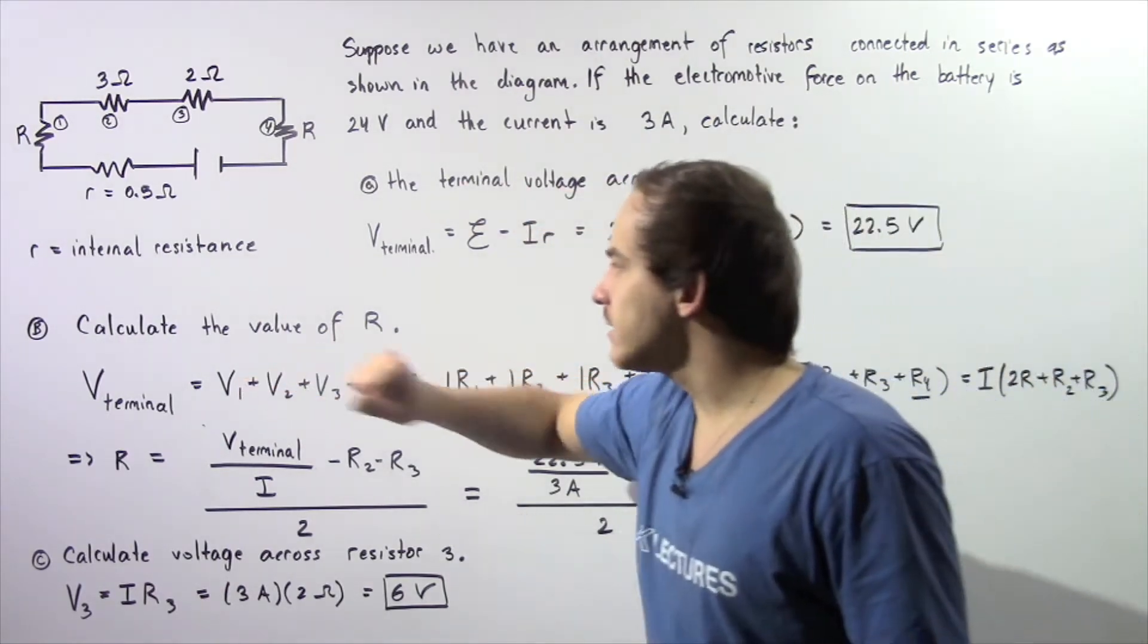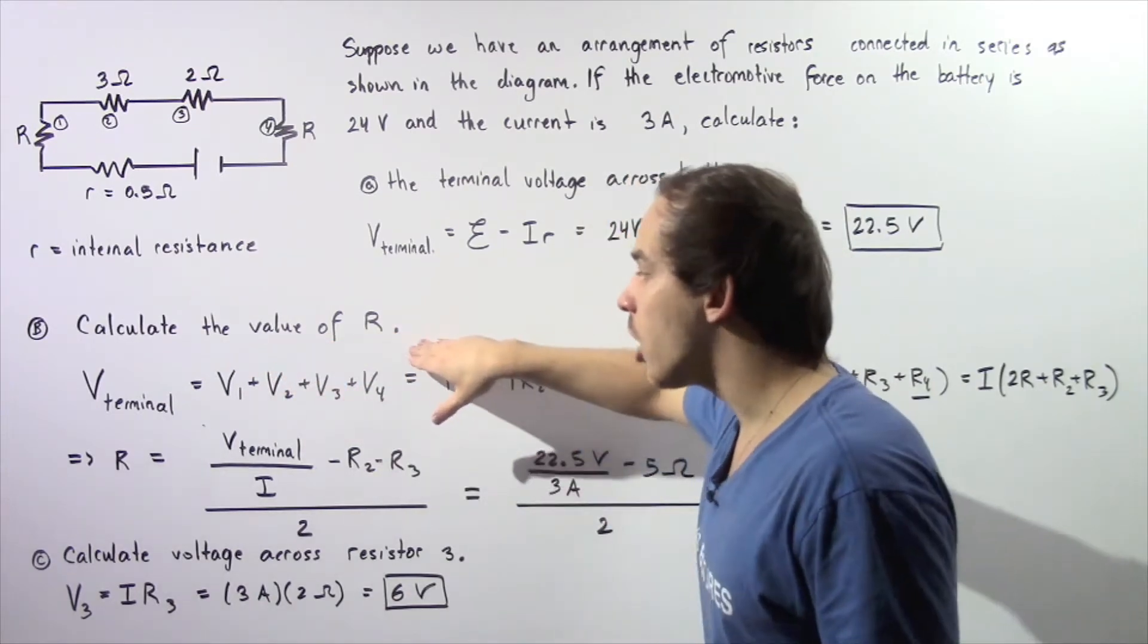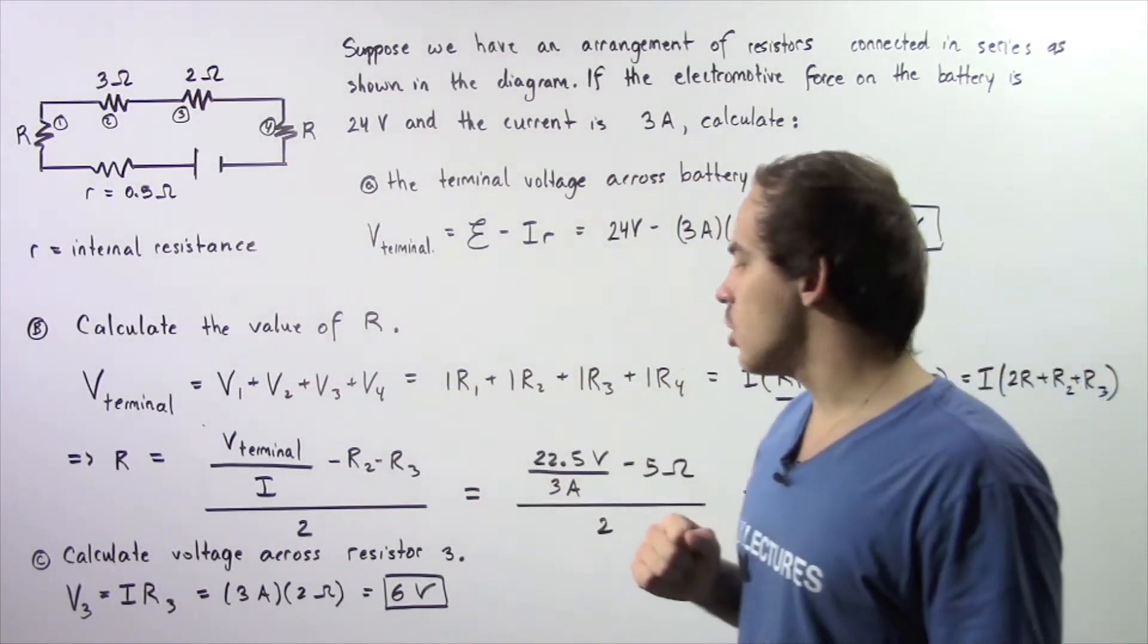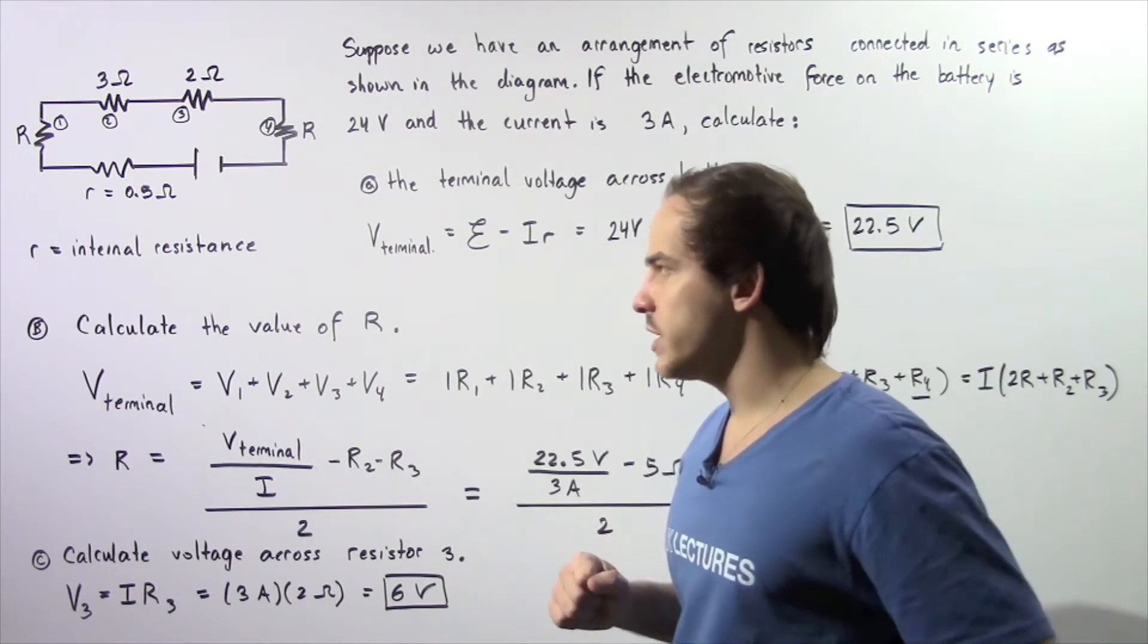In part B, calculate the value of R, and in part C, calculate the voltage across resistor number 3.